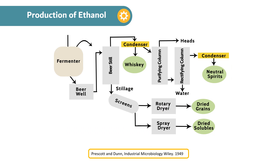We shall look at how the four major steps are applied in practice, such as in the production of ethanol. After fermentation, the first step is removal of insoluble, where the yeast and residual solids are removed in the beer still and ethanol and water are vaporized.